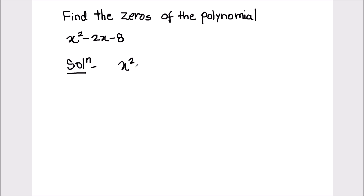Let's start by writing the polynomial x squared minus 2x minus 8 and find the factors of this polynomial. To find the factors, we are going to use the splitting the middle term method and split the middle term which is 2x. We need to find two numbers whose sum equals negative 2 and whose product equals negative 8.